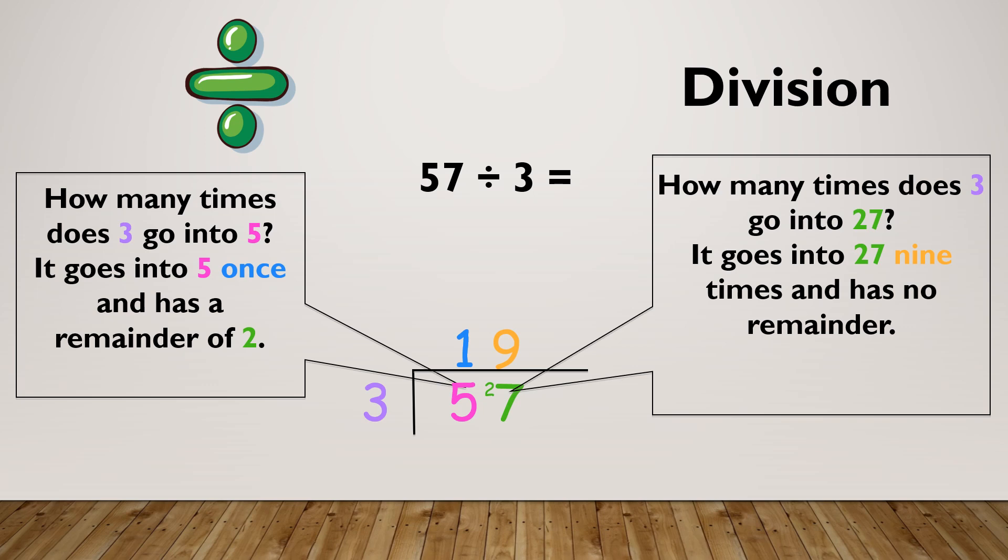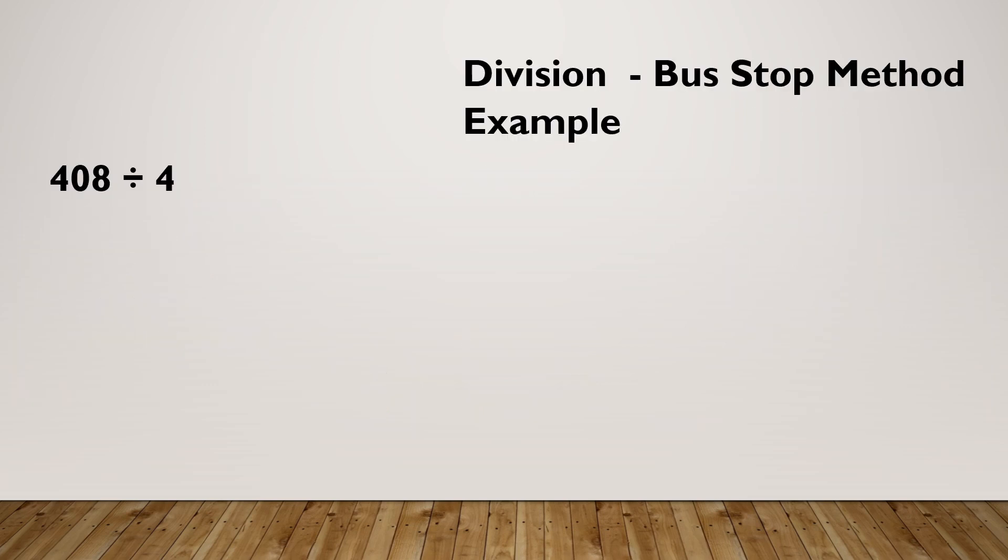Let's do a few examples together. If I wanted to do 408 divided by 4, I would set it up so my 4 goes outside my bus stop and my 408 goes in. Then I would work from left to right. How many 4's in 4? There's 1 with no remainder. How many 4's in 0? There isn't any. And how many 4's in 8? There's 2. There's no remainder, so I'm finished.